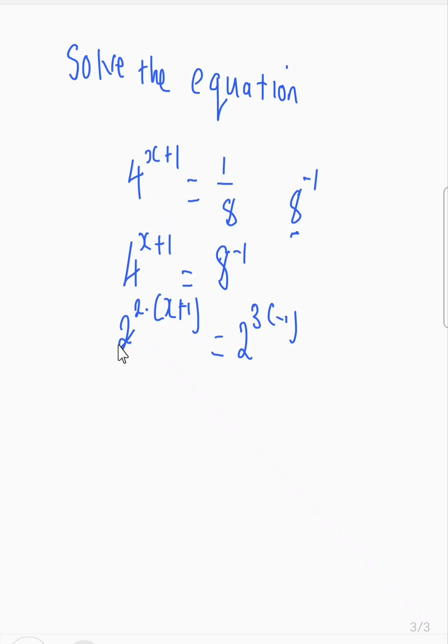Okay, so once you have the same bases, you cancel them out. And we have remained with, we have 2 open bracket, we have x plus 1, which equals negative 3, obviously.